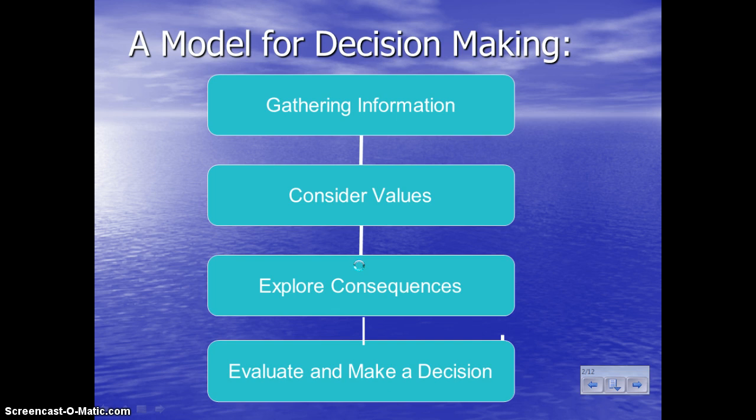The first step in any decision-making model is gathering information, so that you know what you might be picking between. The second thing is you consider what you value, and that would help guide you towards your decision. We'll list some values later so that this will be a little bit more clear.